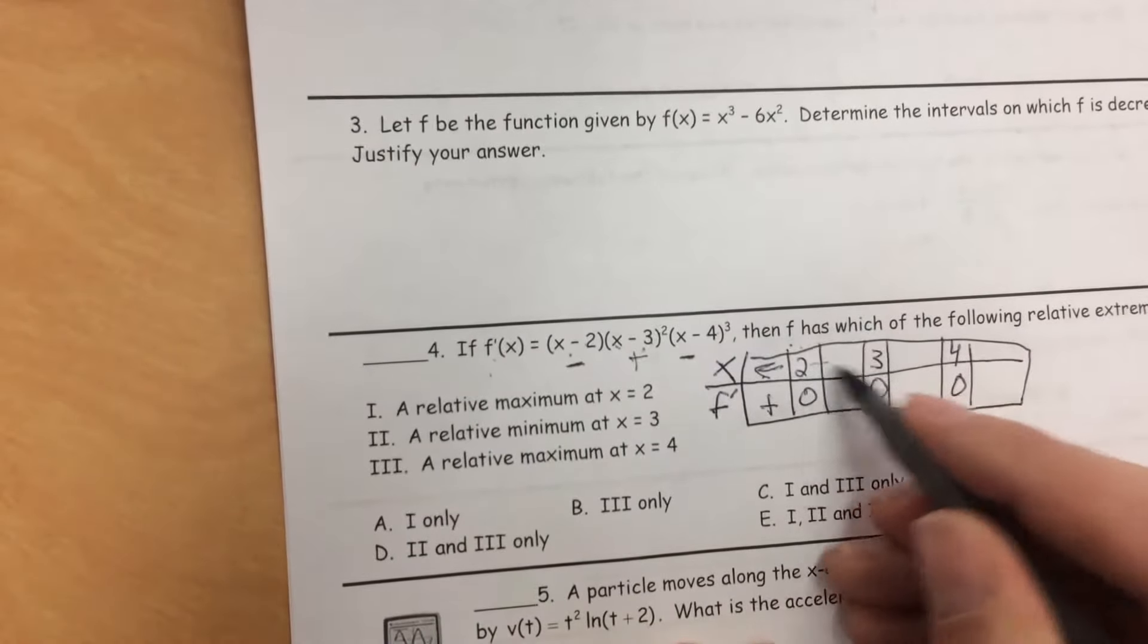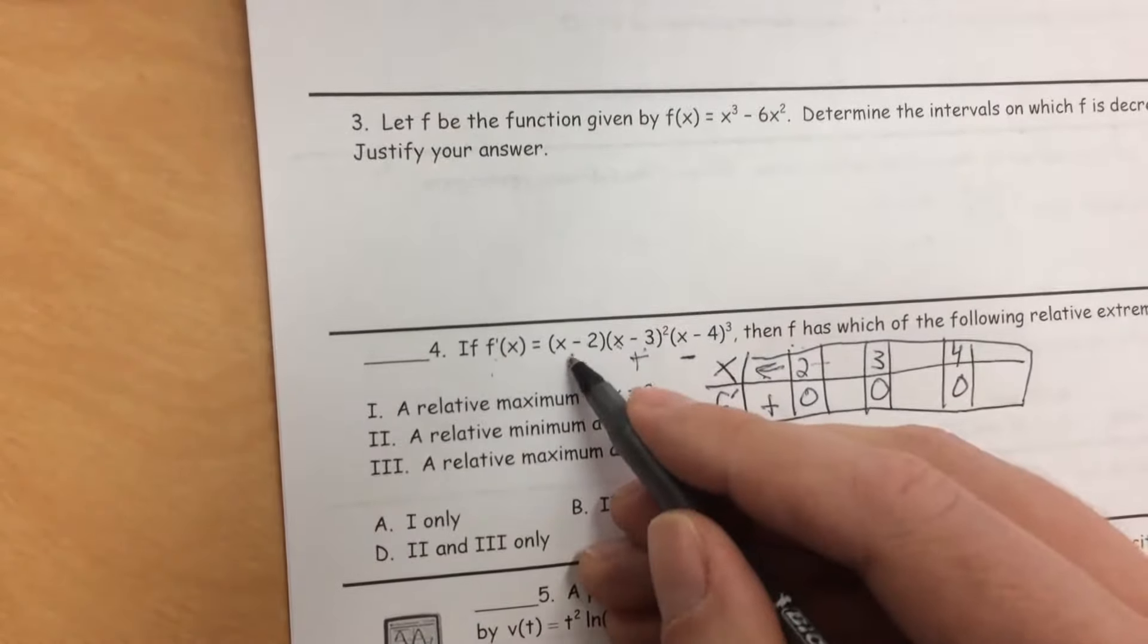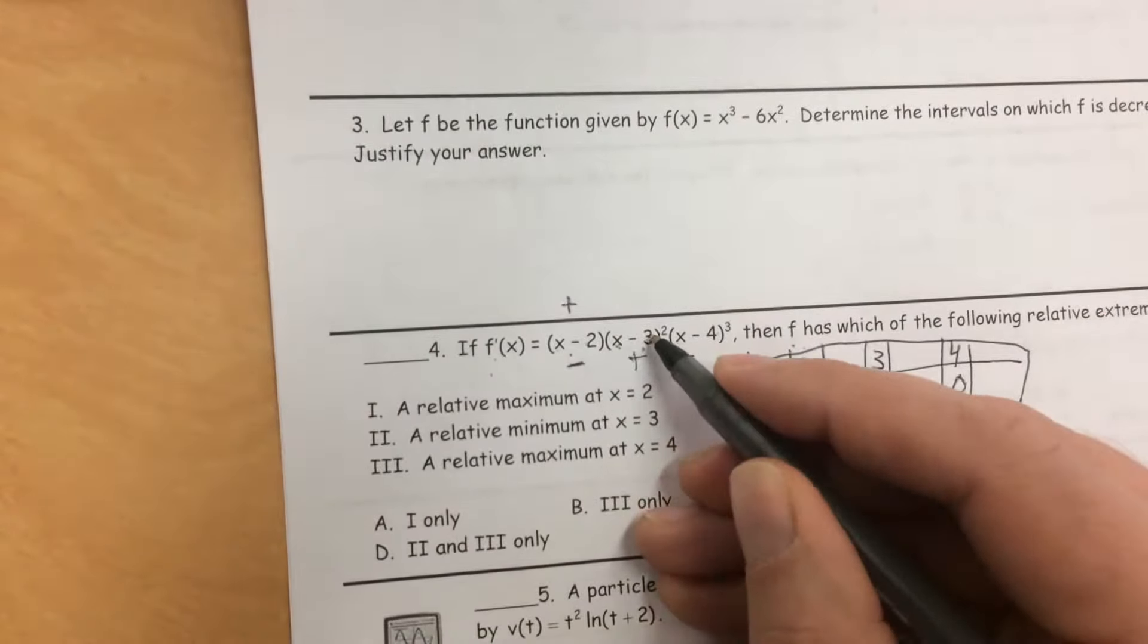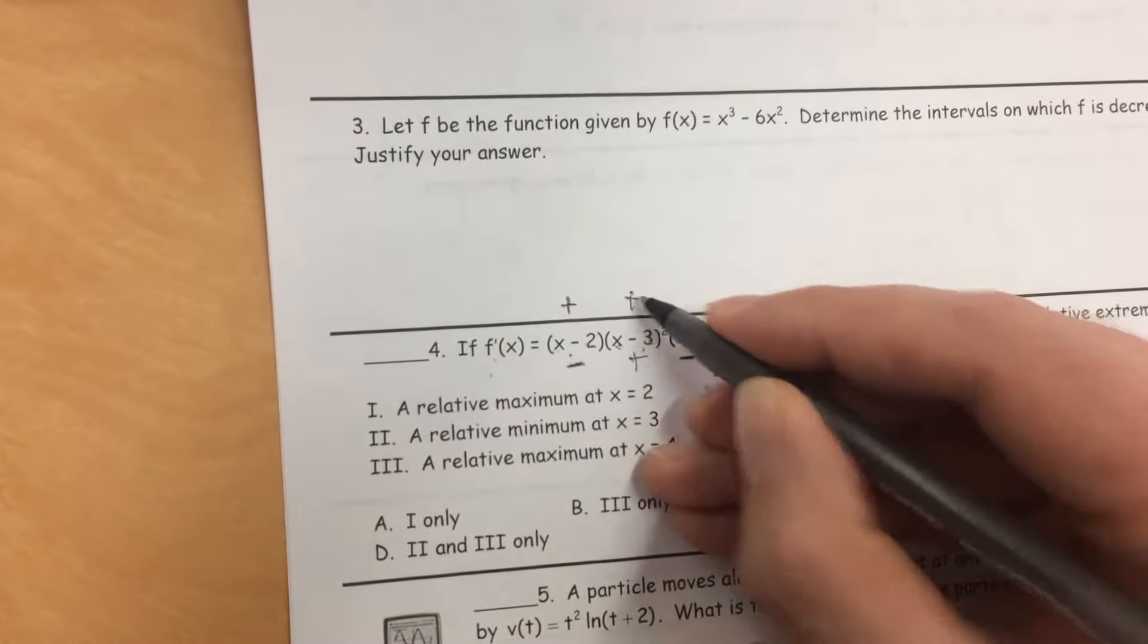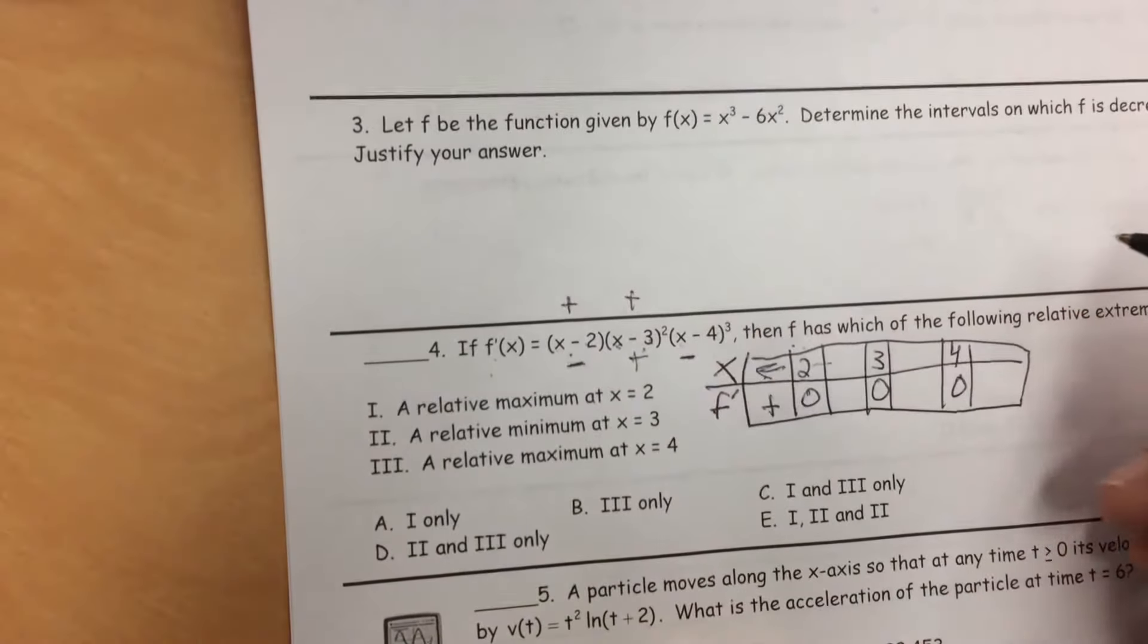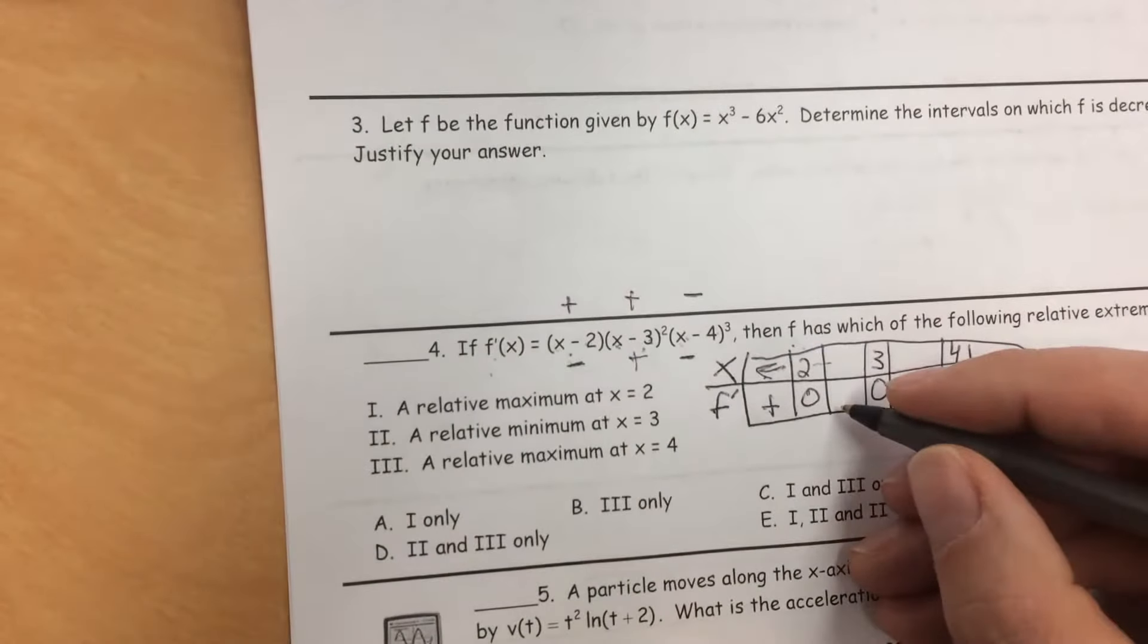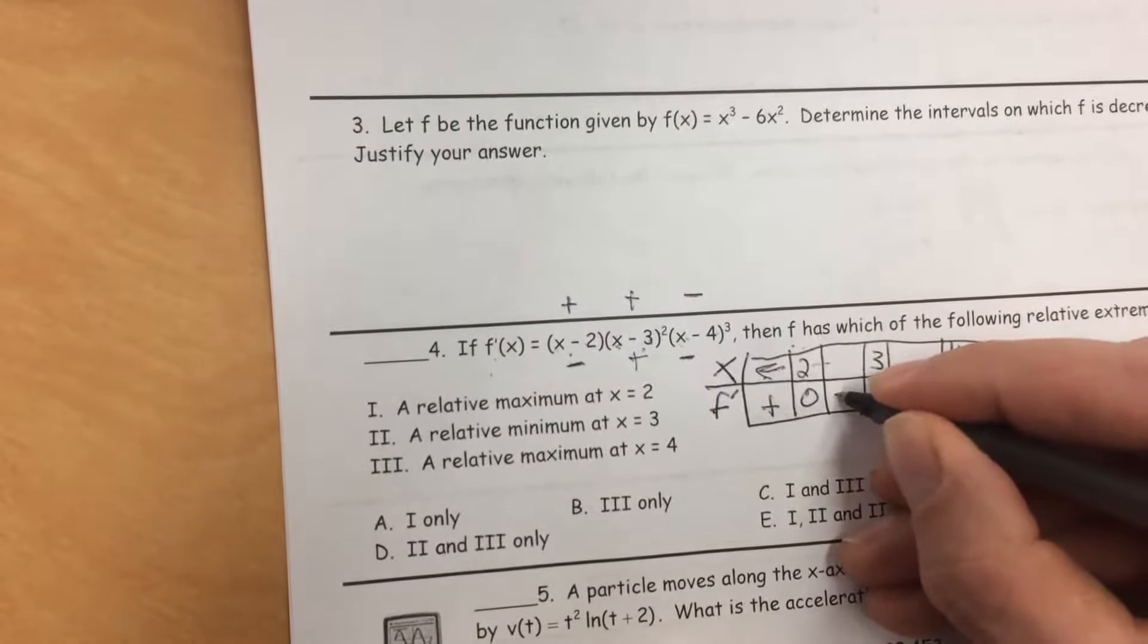When I put in a number between 2 and 3, like 2.5, 2.5 minus 2 is positive. 2.5 minus 3 is negative, but a negative squared is a positive. And 2.5 minus 4 is a negative, and a negative cubed is a negative. So we're going to get a negative.